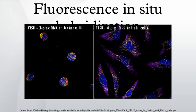FISH is a cytogenetic technique developed by biomedical researchers in the early 1980s that is used to detect and localize the presence or absence of specific DNA sequences on chromosomes. FISH uses fluorescent probes that bind to only those parts of the chromosome with which they show a high degree of sequence complementarity.